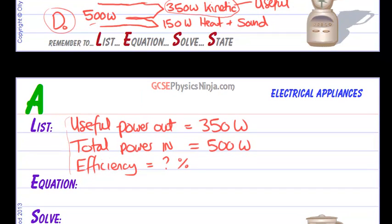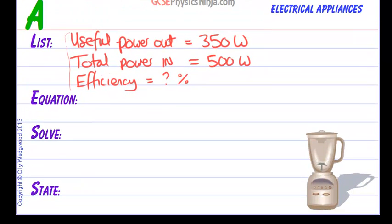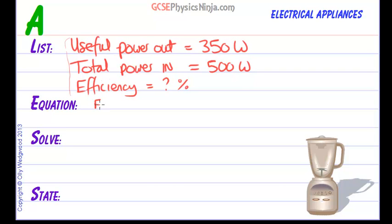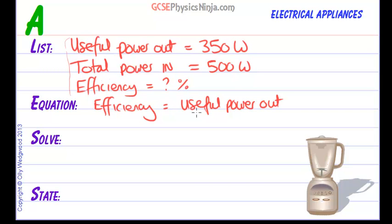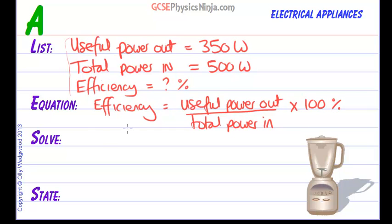Now let's use the equation: efficiency equals useful power out divided by total power in, times by 100% to get it as a percentage. Let's put the numbers in — useful power out is 350 watts, total power in is 500 watts, multiply by 100%.